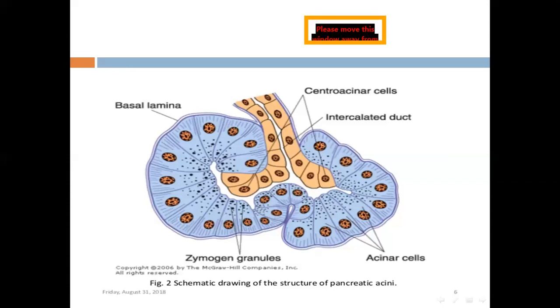This basal lamina separates the acinar cells from the connective tissue compartment. The very important point I want you to concentrate on is this: the basal lamina has specific receptors. Number one: receptors for cholecystokinin, which is released by diffuse neuroendocrine dense cells from the small intestine. The second receptor is for the neurotransmitter acetylcholine.